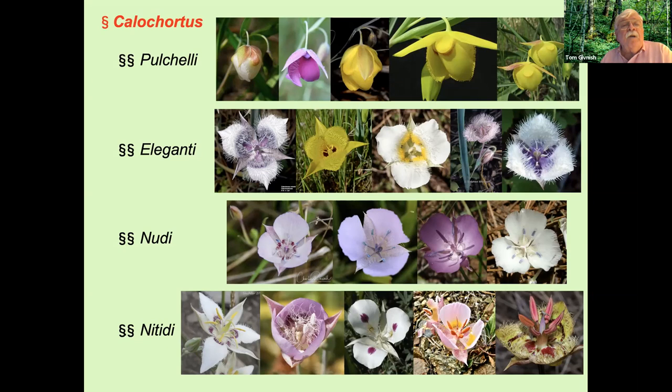Calochortus tiburonensis, by the way, was not known to Ownby and was tentatively and controversially placed in the section based on its floral form by Hill in 1973, despite bulb coats that should have placed it in section Cyclobothra.